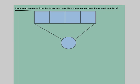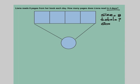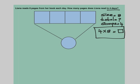Liana reads 8 pages from her book each day — that means for one day she is reading 8 pages, so the size is 8. How many pages does Liana read in 4 days? Days represent the groups here, so the number of groups is 4. Since we have to find the total, we use a multiplication equation: 4 times 8 equals what — that is the unknown. Next, let's fill in the tape diagram. There are 4 groups of 8.